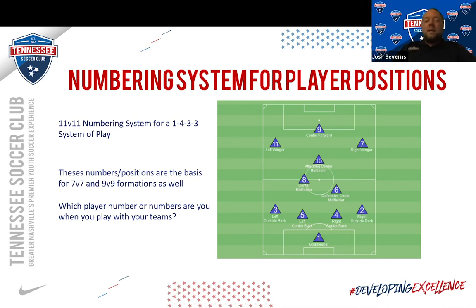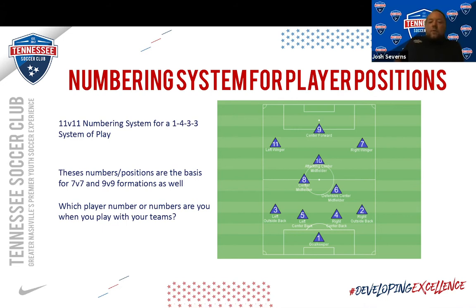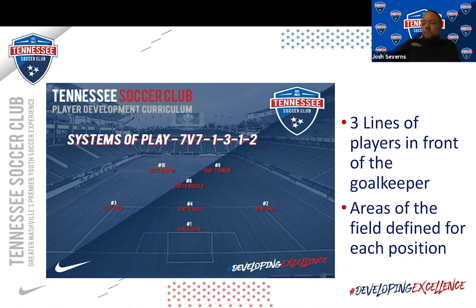What's the really popular number and position in today's game? We've got seven, ten, and eleven coming through the chat. So as we look at the 7v7 system of play — a 1-3-1-2 — we always want to include the goalkeeper. Hopefully some of you Academy players playing 7v7 have played in this formation before. As you notice, there are three lines of players. We've got our three backs: three, four, and two. One central midfield player, which is an eight, and then ten and nine are our forwards in this system.